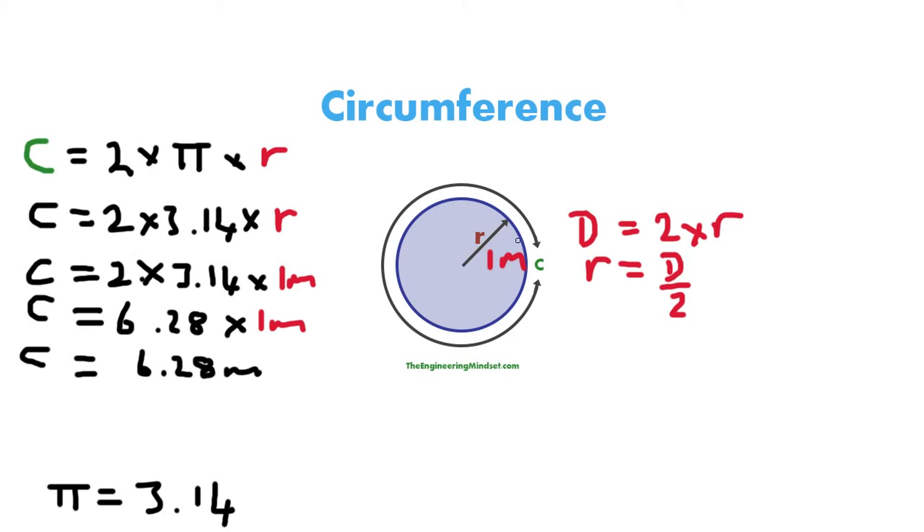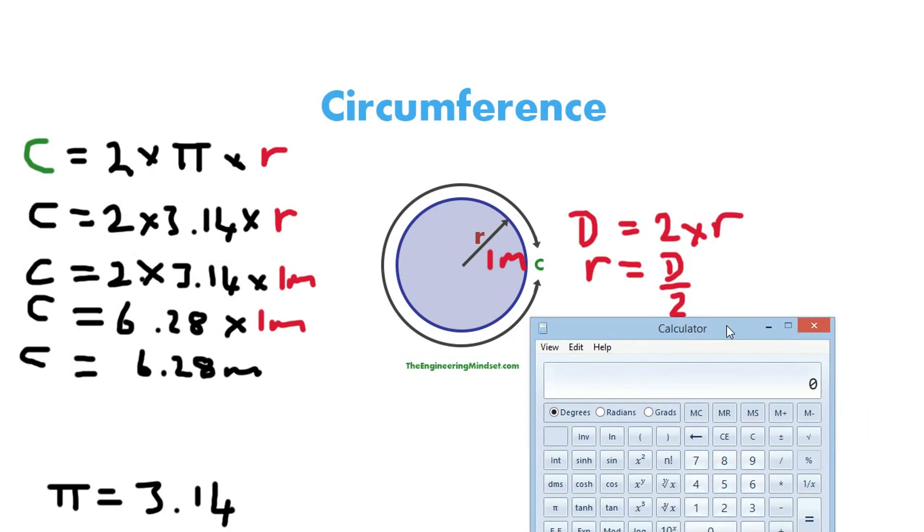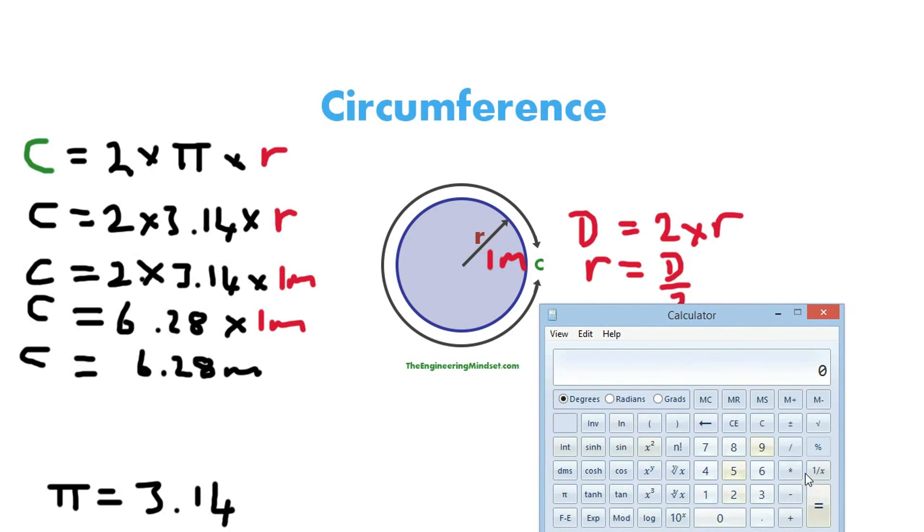So the circumference, that distance around the circle, the perimeter of the circle in this example is 6.28 meters. And actually we'll just check in the calculator as well. So 2 times 3.14 equals 6.28 times 1 meter equals still 6.28.